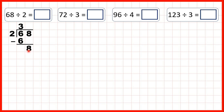So now we can divide 8 by 2. 8 is in the 2 times table, so we can write 8 below. And because 8 divided by 2 is 4, we can write 4 as the ones digit of our answer, because 4 times 2 is 8. We don't have any remainder and no other digits to bring down, so our answer is 34.